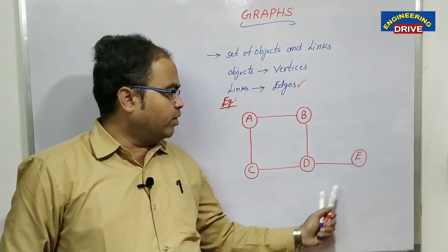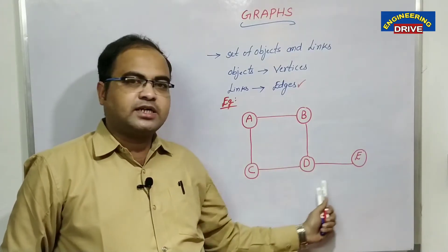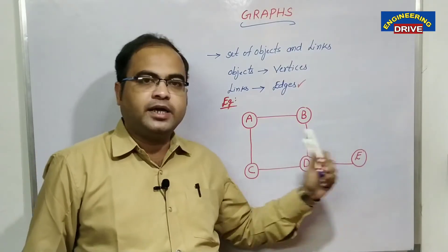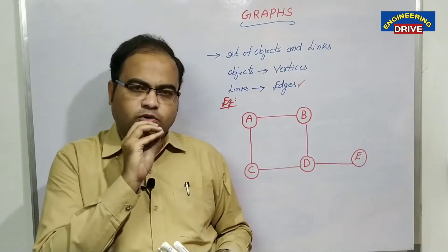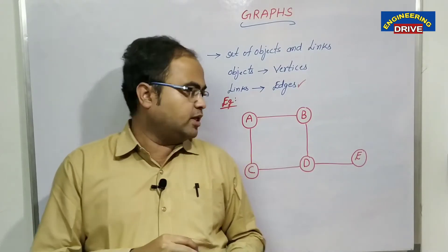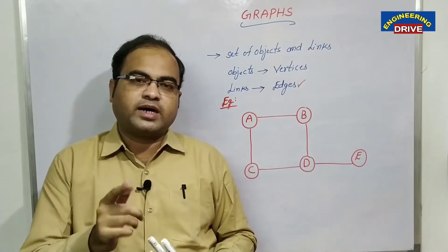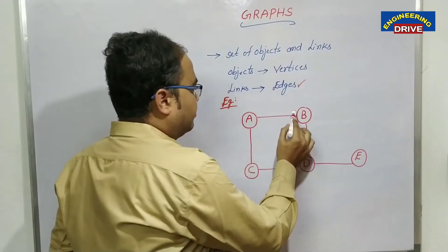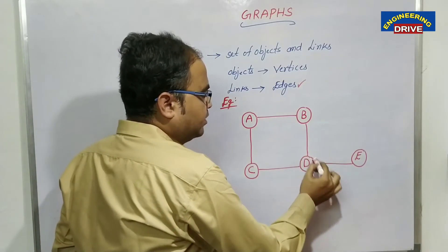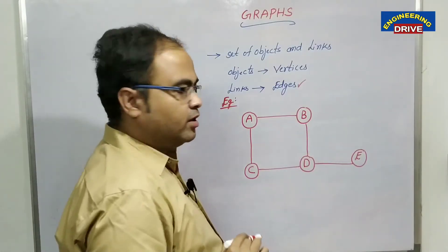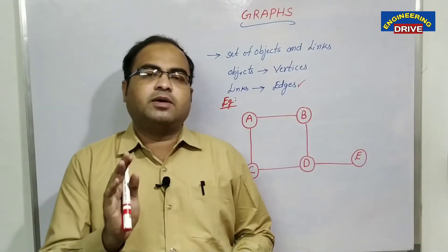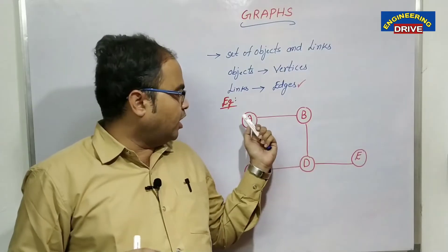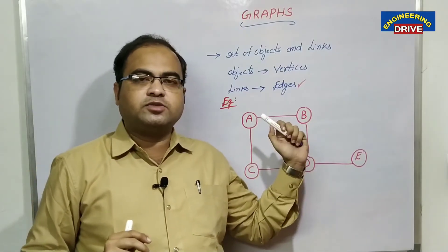If I ask you how many vertices are there in this graph, the answer is 5 — A, B, C, D, E. Next, if I ask how many edges are available in this graph, you can count: edge number 1, edge number 2, edge number 3, edge number 4, and edge number 5. The main purpose of edges is to connect one vertex to another vertex.